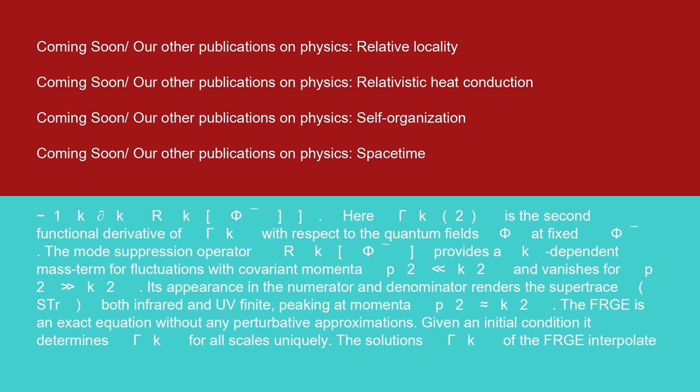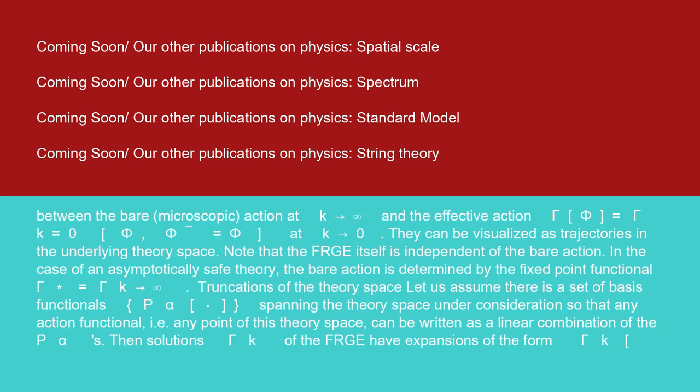Given an initial condition, it determines Γ_k for all scales uniquely. The solutions Γ_k of the FRG interpolate between the bare microscopic action at k→infinity and the effective action Γ(Φ̄) equals Γ_(k=0)(Φ̄, Φ̄=Φ̄) at k=0. They can be visualized as trajectories in the underlying theory space. Note that the FRG itself is independent of the bare action. In the case of an asymptotically safe theory, the bare action is determined by the fixed-point functional Γ* equals Γ_(k→infinity).